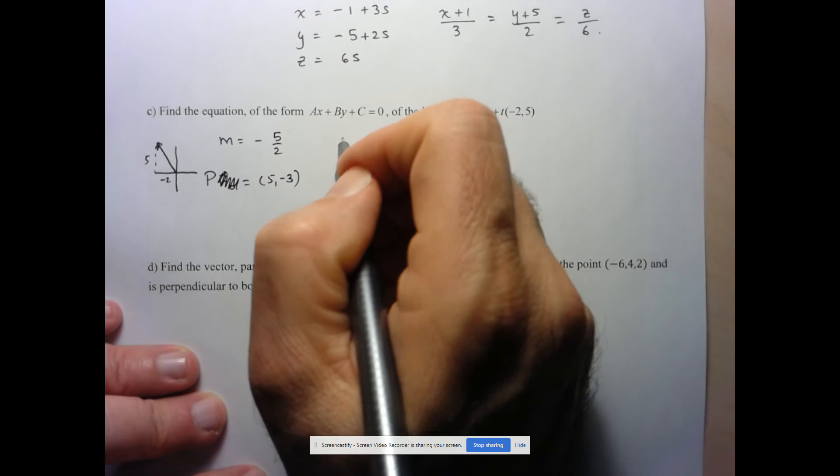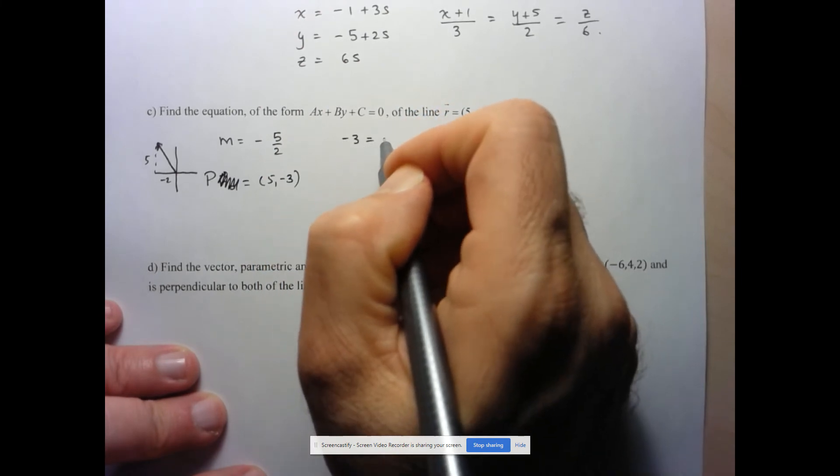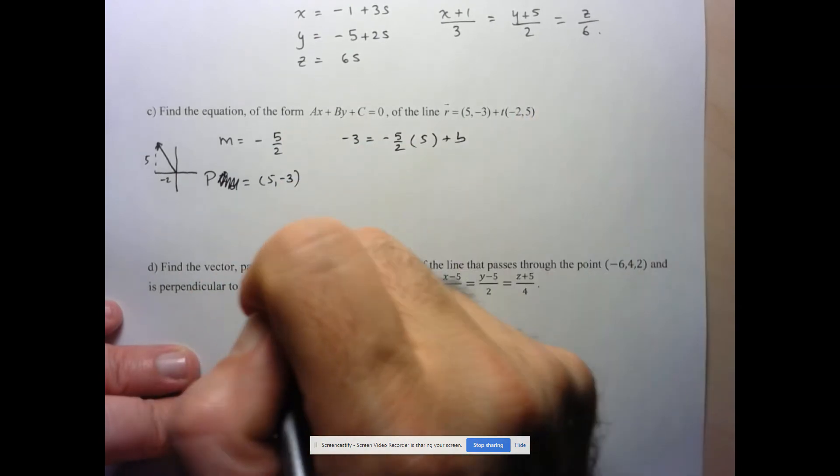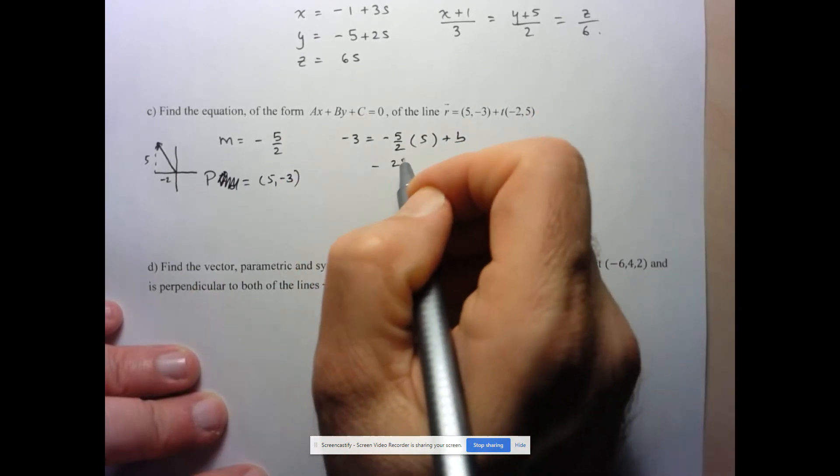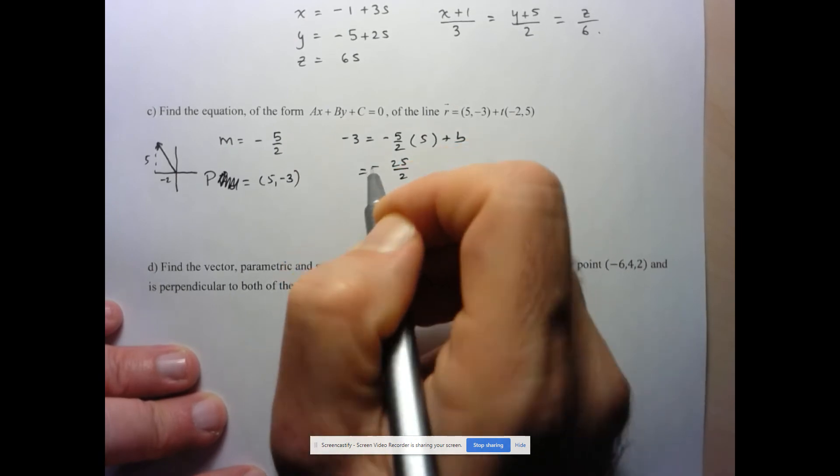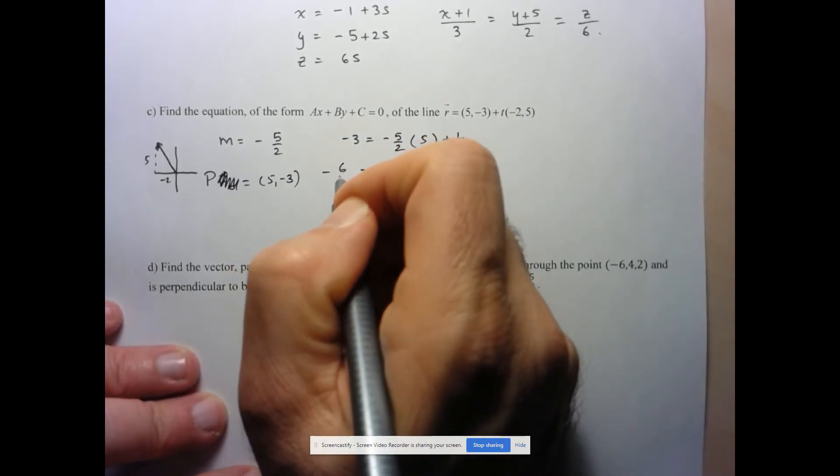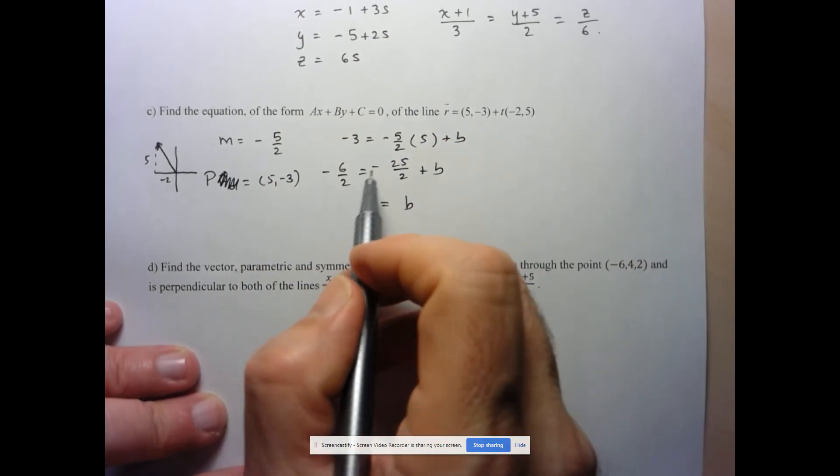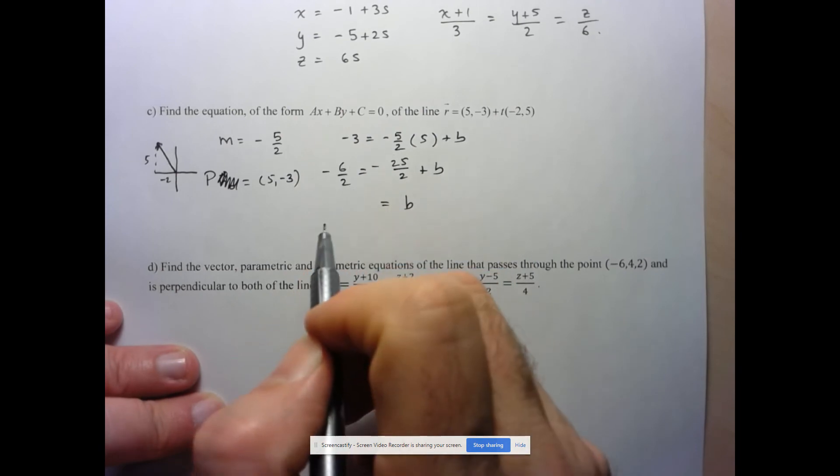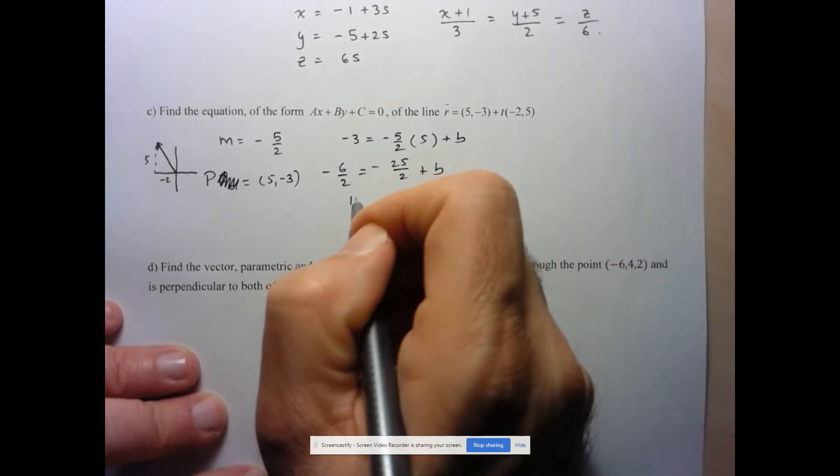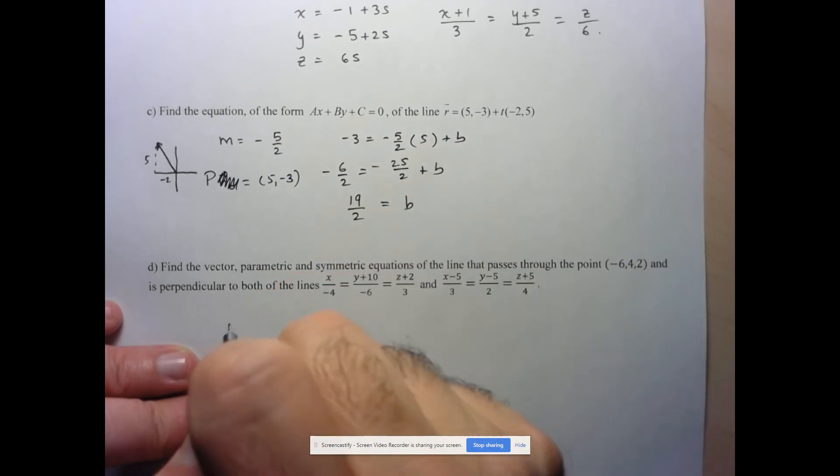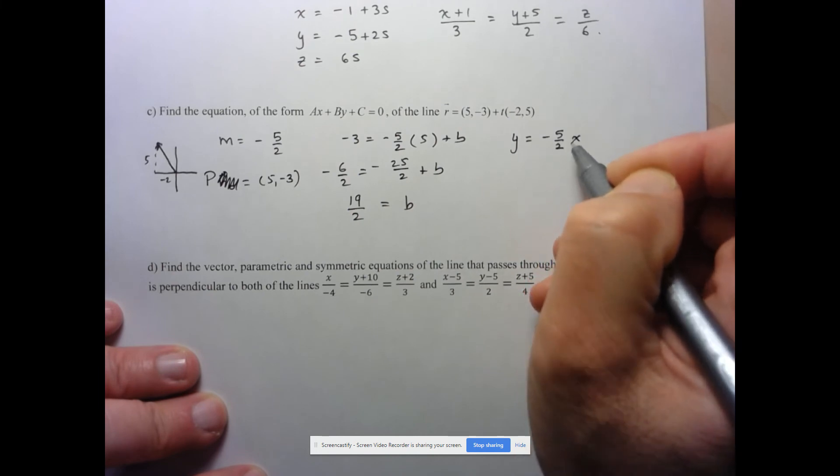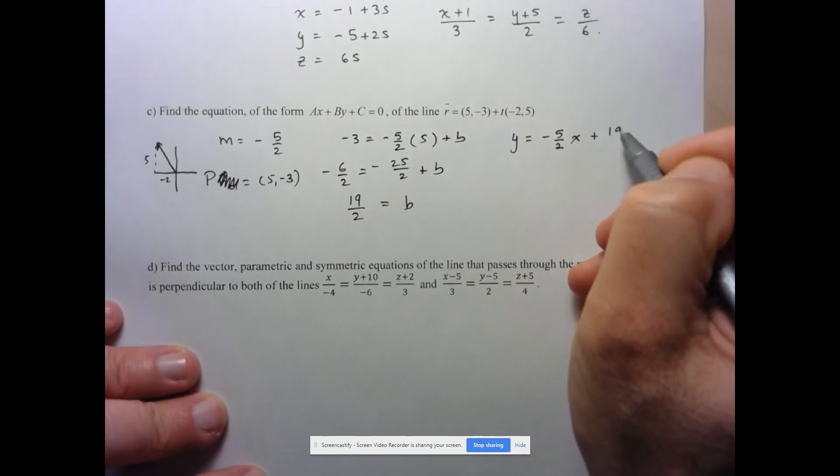So when Y is equal to negative 3, we've got M, which is negative 5 halves, times the X value of 5 plus B. So here we're going to have negative 25 over 2. So here I'll put this over 2. I've got negative, that'll be negative 6 over 2 plus B. So B is equal to negative 6 over 2 plus 25 over 2. So that looks like it's going to be 19 over 2. So my equation is Y equals negative 5 halves X plus 19 over 2.